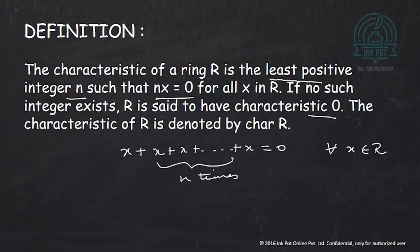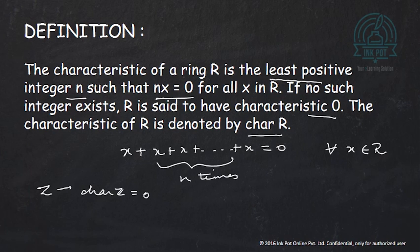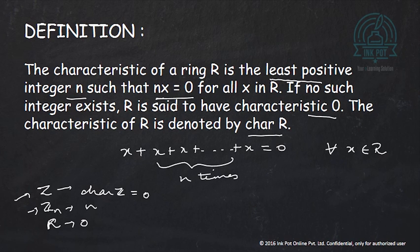The notation used for characteristic is char(R). The ring of integers has characteristic 0, so char(Z) is 0. We saw that Zn has characteristic n. Zn is a finite ring while Z is an infinite ring. For example, the ring R of real numbers also has characteristic 0 because such an integer does not exist. It is quite possible that for an infinite ring the characteristic is non-zero — for that consider the ring Z2[x].